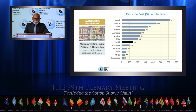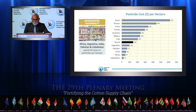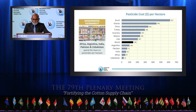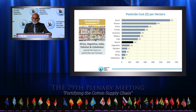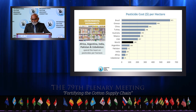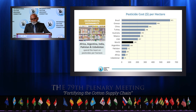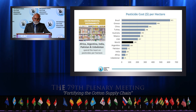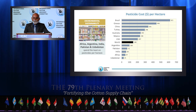Now we will take a look at expenditure on pesticides. Expenditure on pesticides is less in Africa, Argentina, India, and Uzbekistan, compared to countries such as Brazil, Greece, and China. This could be because of less use of pesticides such as growth regulators, defoliants, and herbicides in these more advanced countries.